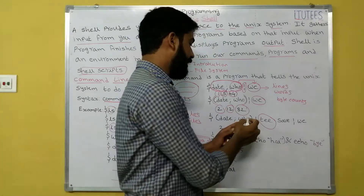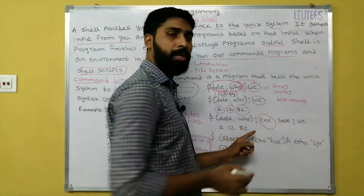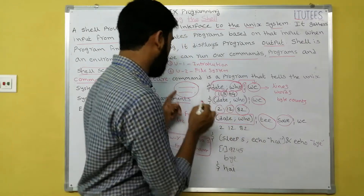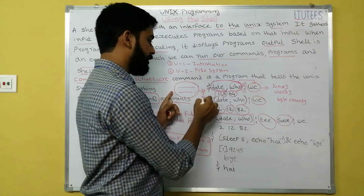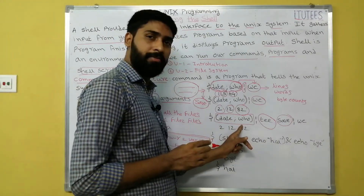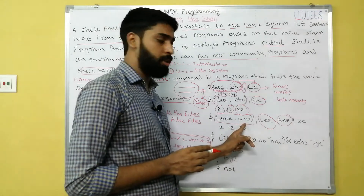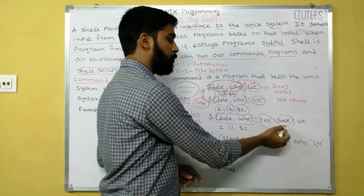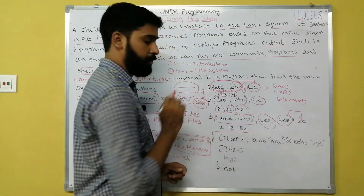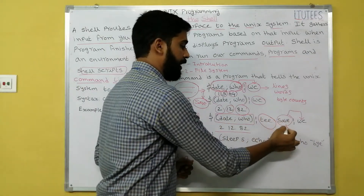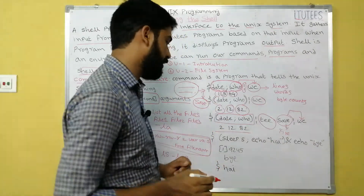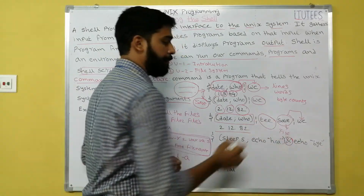The 'tee' command reads input from standard input and writes to both standard output and a file. For example, 'date; who | tee save | wc' — the output is saved into a file named 'save' and simultaneously piped to wc. If you run 'cat save', it displays the saved date and login details.